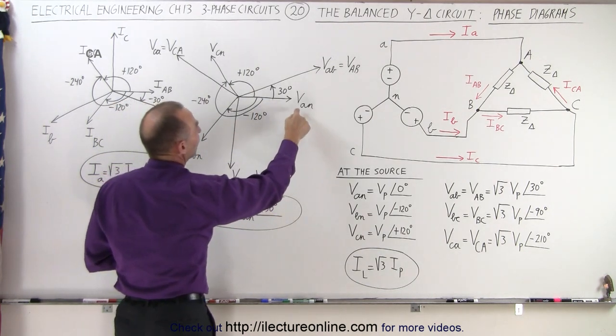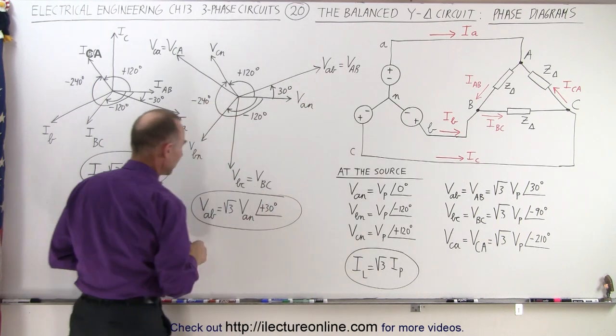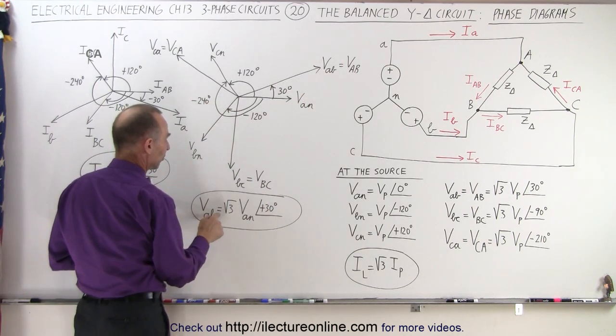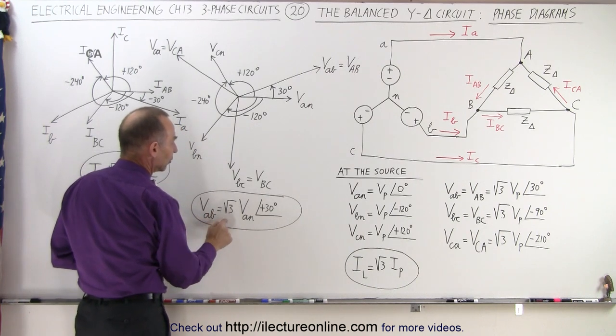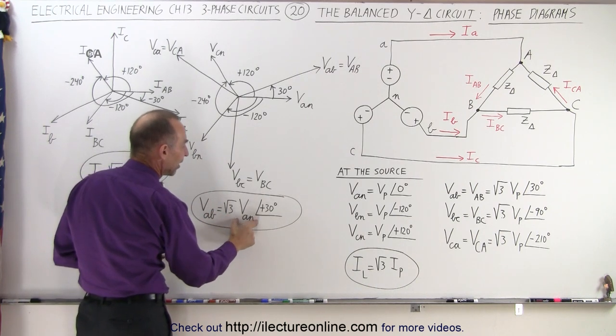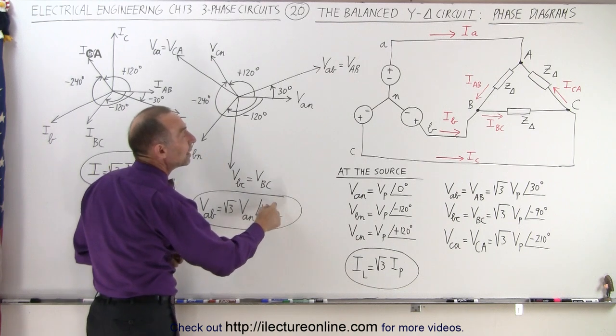So if we want to compare VAN and VAB, you can see that VAB can be expressed as, this is what we call the line voltage, is equal to the square root of three times the phase voltage with a 30 degree lead angle.